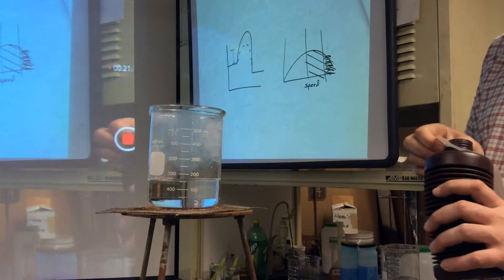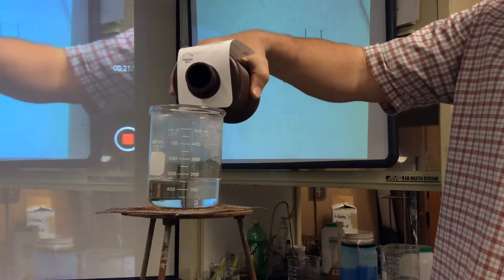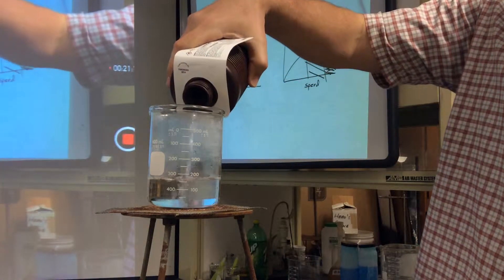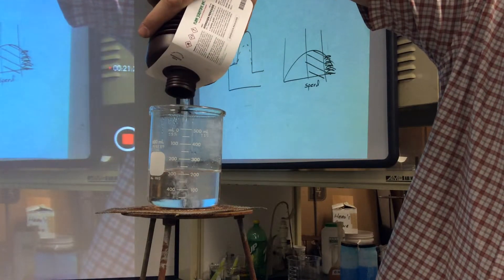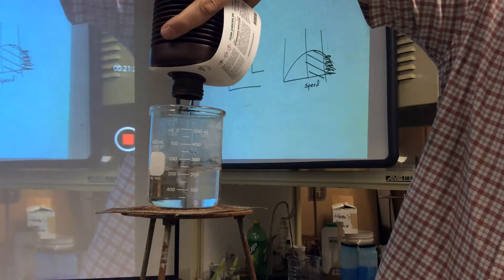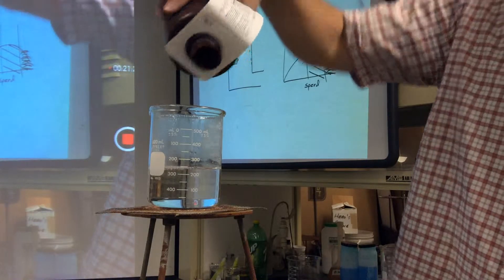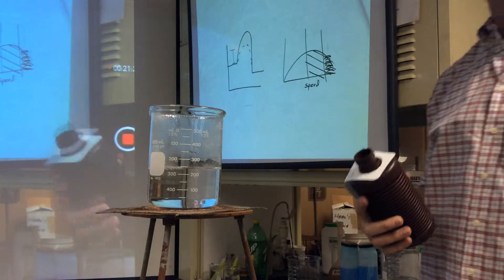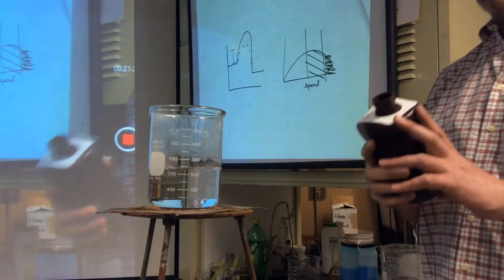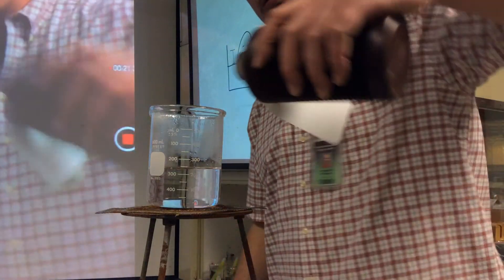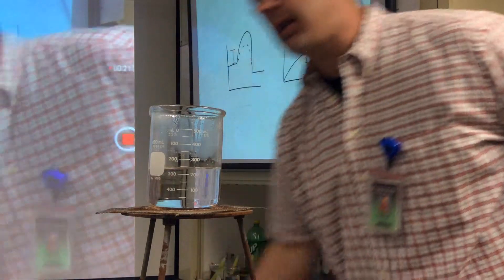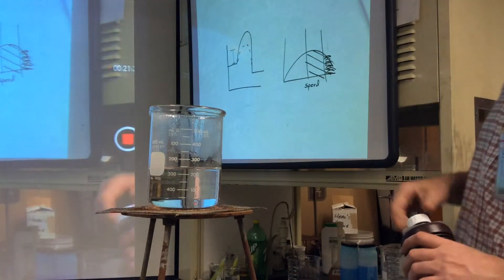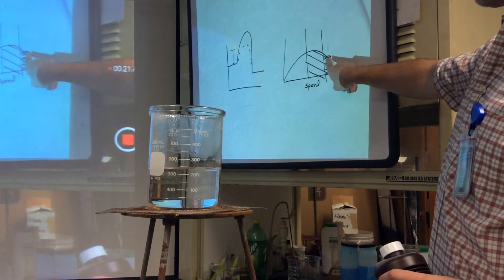All right, now right now the hydrogen peroxide should react with the salt. In fact, it is reacting, but it's reacting too slow. It's not doing anything that I like it to do, it's not very visual. So what I'm going to do is add a catalyst.